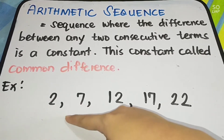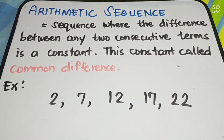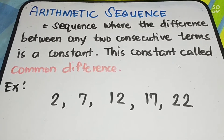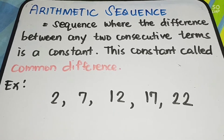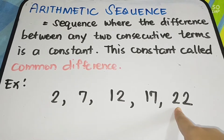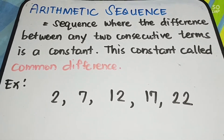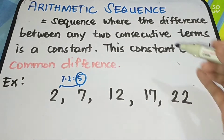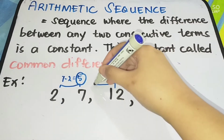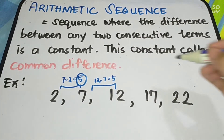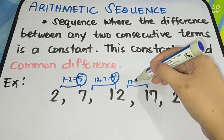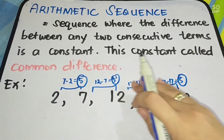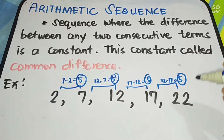For example, I have here a sequence of 2, 7, 12, 17, and 22. Let us know if this sequence is arithmetic. We need to see the difference between each term. You are going to subtract from right to left. So: 7 minus 2 is 5; 12 minus 7 is 5; 17 minus 12 is 5; 22 minus 17 is 5. As you can see, we have a common difference.